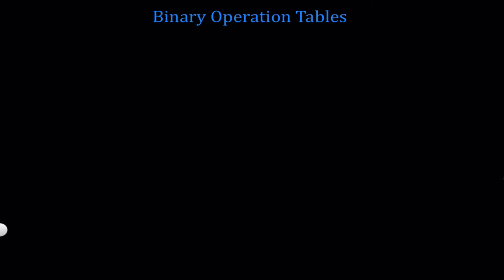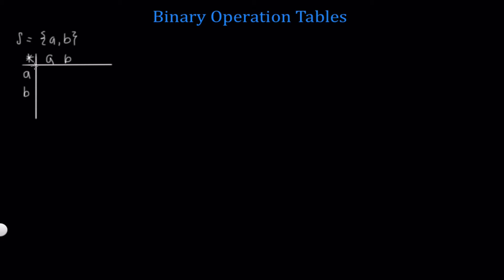In this video we're going to discuss binary operation tables. If we have a finite set S, we can use a table to define a binary operation on S. So let's say we have the finite set S of two elements, which we'll denote as A and B. We can construct a binary operation table where we have the elements A and B on this side and down here. Remember, in order to be a binary operation, we need a function mapping S cross S into S.